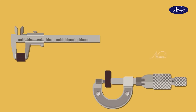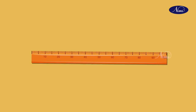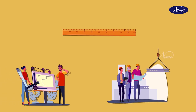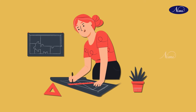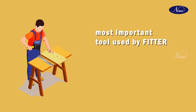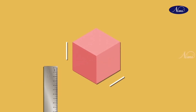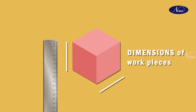Steel rule: in modern industry, there are many types of measuring instruments used according to their accuracy of job. A scale is a measuring device used by architects and engineers that assists them in marking drawings to a scale other than full size. A rule is used to measure actual sizes. A tape is used by tailors for measuring and marking on cloth. The most important tool often used by the fitter for measuring purposes is called a steel rule, or engineers steel rule, and it is used to measure the dimensions of work pieces.